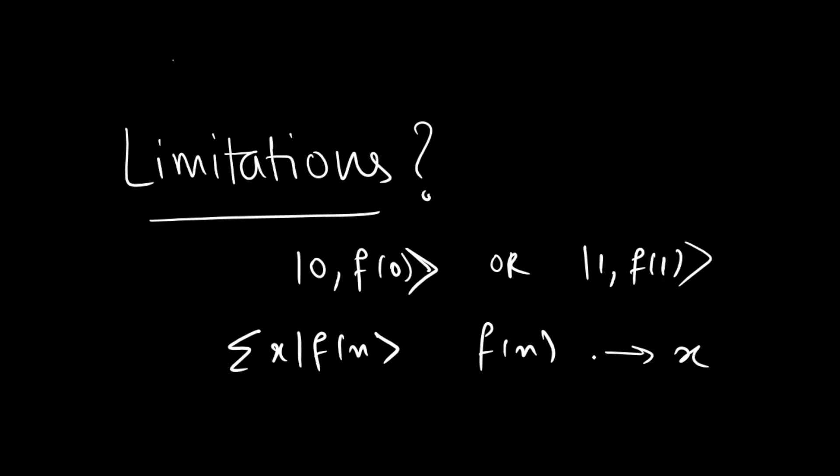This implies quantum parallelism is not that useful. So in the next video we will see how with the help of Deutsch algorithm we can extract information about more than one value of f(x).